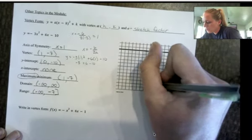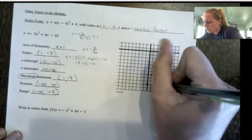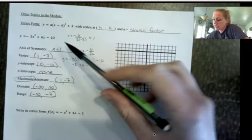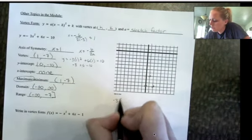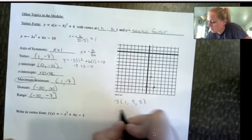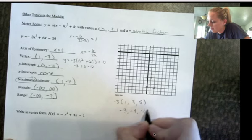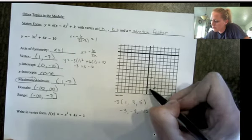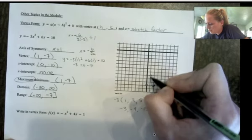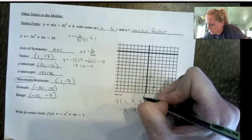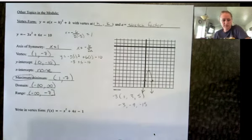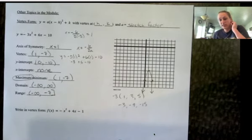So this y-intercept is reflected over here. We could also use our a times 1, 3, 5 pattern. Since a is negative 3, if I multiply those by negative 3, I get negative 3, negative 9, negative 15. So that means I'm going down 3 and over 1, which I have. And then I would go down 9 and over 1. I don't have room on my graph, so I'm just going to leave these guys. There is our graph.